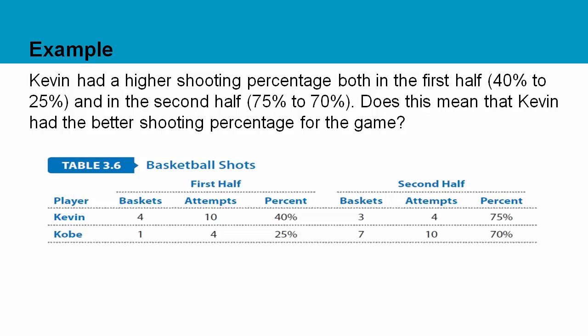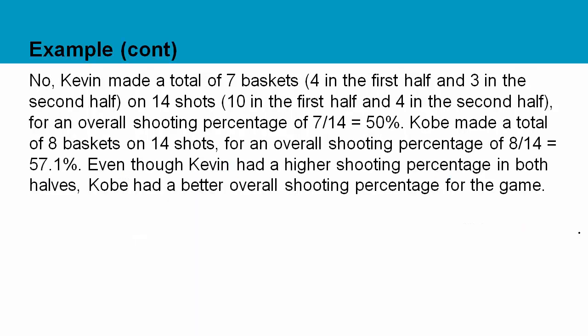When you look at the absolute numbers, look what happens. Kevin shot 40% in the first half — Kobe only shot 25% — but that was 4 for 16 and 1 for 4. In the second half Kevin was 75%, 3 for 4, and Kobe was 70% but that was 7 for 10. When you actually add up the numbers, you can see that Kevin had a total of 7 out of 14 and Kobe had 8 out of 14. Even without doing any math you can see that Kobe did better. If we do the actual math, it's 50% versus 57.1%, and it's all because the two players didn't have the same number of shot attempts in each half, so you can't just look at the percentages.